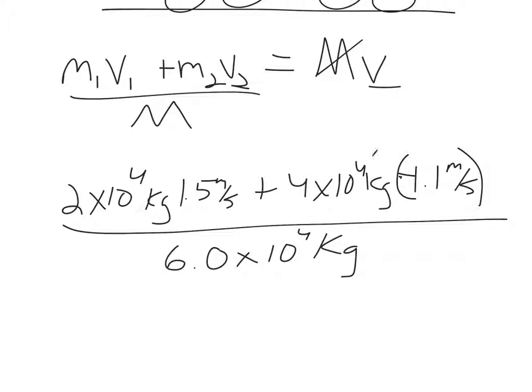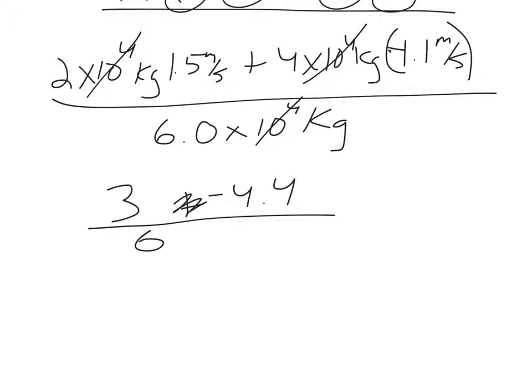Over, if I add them together, they both have the same power of 10, so I can just add them. It's going to be 6.0×10^4 kilograms. And that should give me my answer. Look, I don't have to bother with the 10 to the 4th, it cancels. 2 times 1.5 is 3, plus 4 times 1.1 is 4.4, but it's not plus, it's minus because that's negative, over 6.